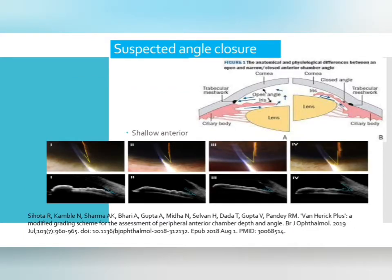Starting with suspected angle closure: during slit-lamp examination, if you find asymmetrical AC depth in the two eyes, you decide to do gonioscopy where the AC depth appears shallow. AC depth is measured using the van Herick grading — make the optic section as narrow as possible and place it at the periphery of the cornea, then compare the AC depth with the corneal thickness. If AC depth is more than corneal thickness, write PACD > 1 CT; if equal, PACD = 1 CT; if less, PACD = ½ CT or PACD < ½ CT.